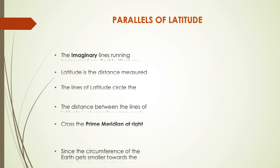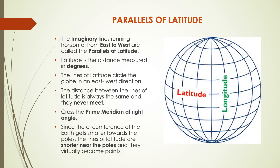Parallels of latitude. The imaginary lines running horizontal from east to west are called the parallels of latitude. Latitude is the distance measured in degrees. When we measure the latitude of a place, we always write these figures in degrees — like 23.5 degrees, 90 degrees, or 66.5 degrees. The lines of latitude circle the globe in an east to west direction and the distance between the lines of latitude is always the same.